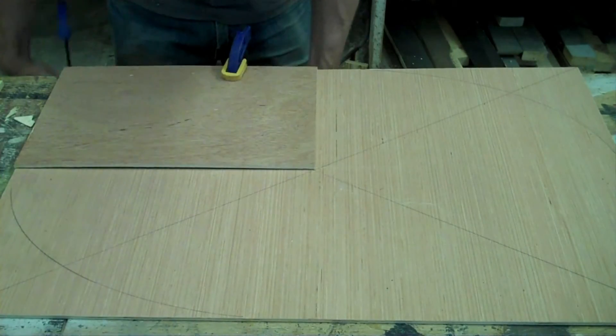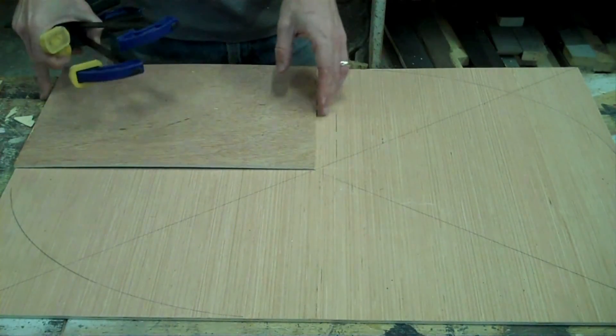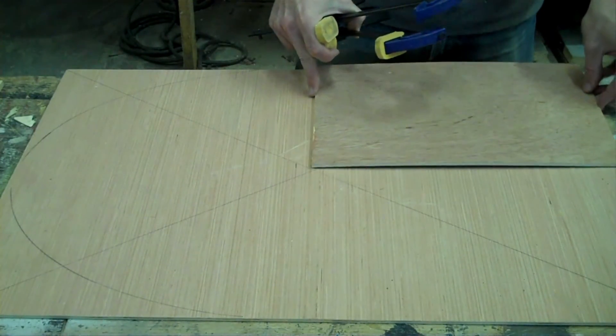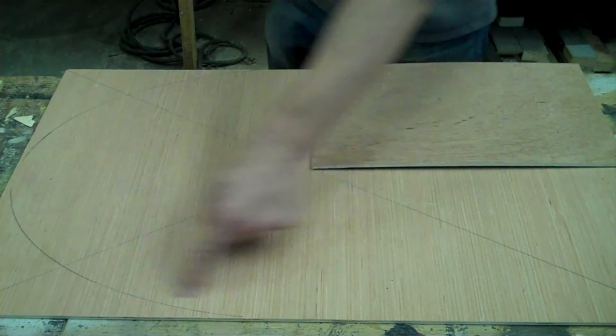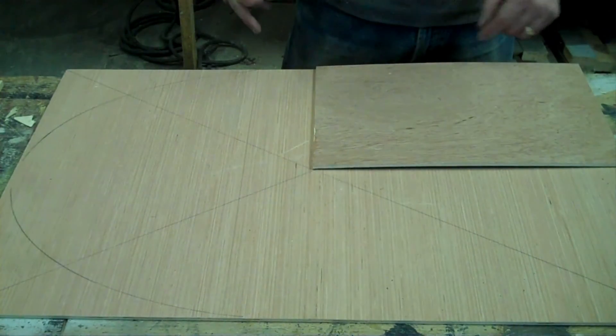Now all you have to do is repeat this four times on each of the corners, and you'll have your ellipse.